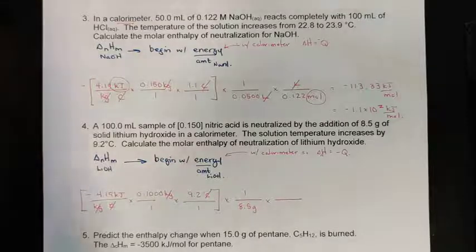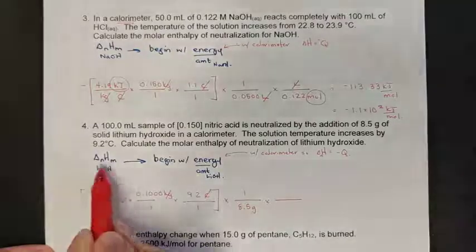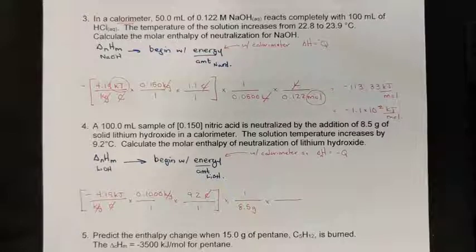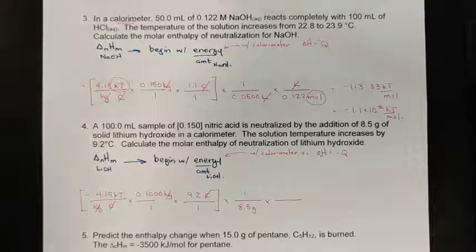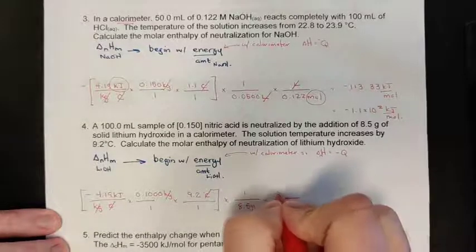To find the molar mass of LiOH, I use the periodic table. Lithium is 6.94, oxygen is 16, and hydrogen is 1.01, giving a molar mass of 23.95 g/mol.